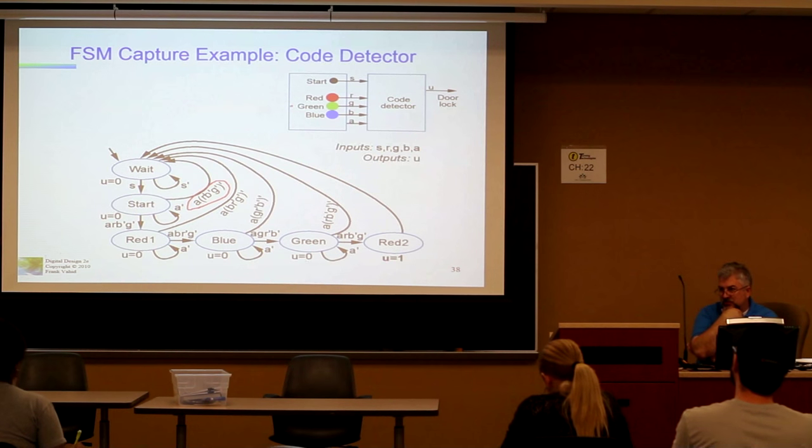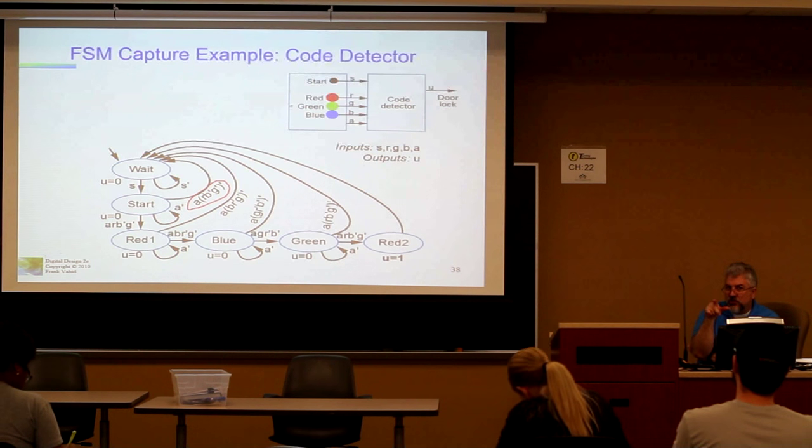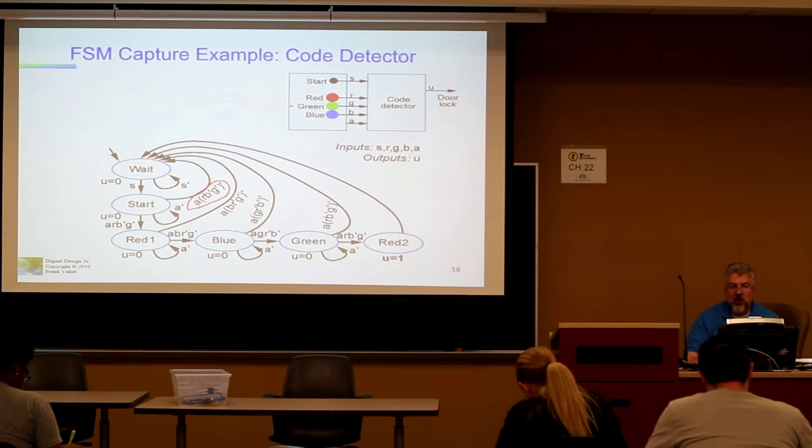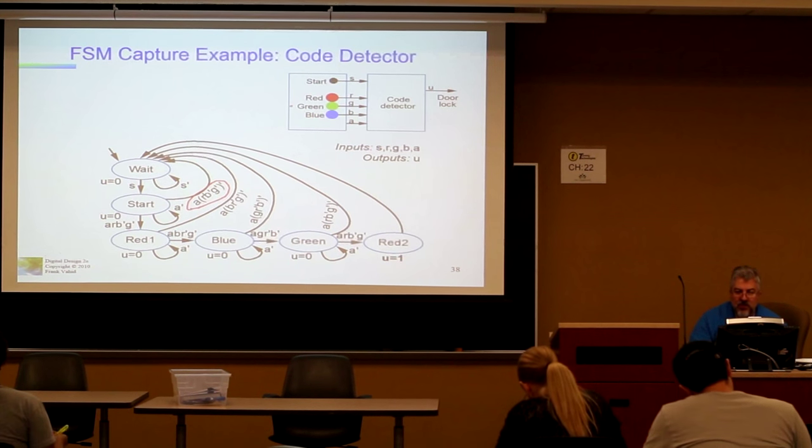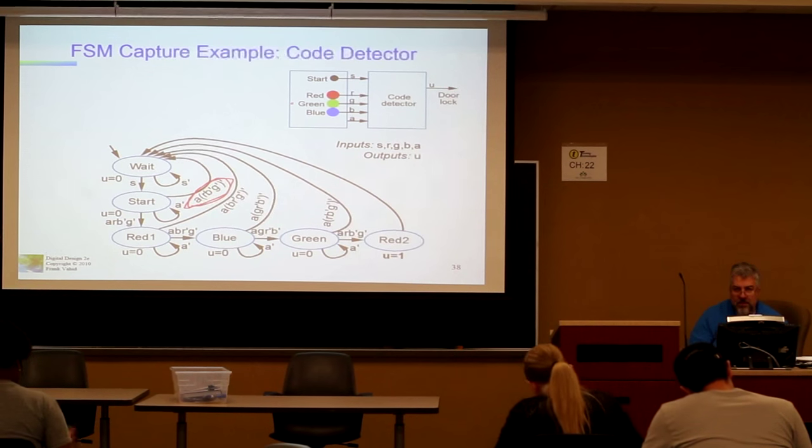In fact, this might be very good to do a truth table on. How many inputs will this truth table have? Four. How many lines in this truth table? Sixteen. So what I want you to do is in your little groups of two or three or four, whatever, write the truth table for this right here. All right.